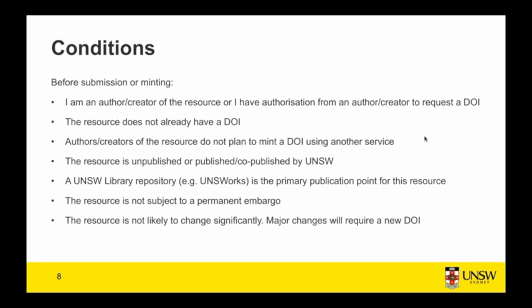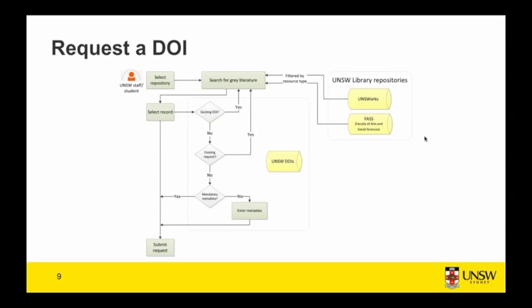There should be no existing DOI request, and the resource needs to meet the mandatory metadata requirements set by the ANDS service which links to DataCite. In the user interface, the requester is given these conditions to agree to before they submit: they must be an author or have authorization to request a DOI; the resource doesn't already have a DOI; they don't plan to mint a DOI using a different service; the resource is unpublished or published by UNSW; the repository is the primary publication point; the resource is not subject to a permanent embargo; and the resource is not likely to change significantly — major changes would require a new DOI.